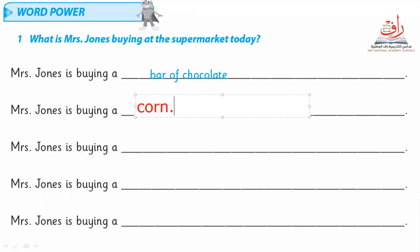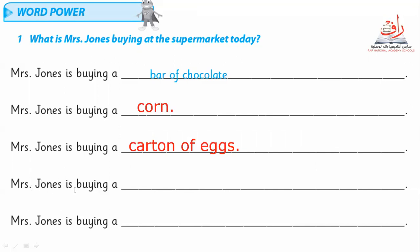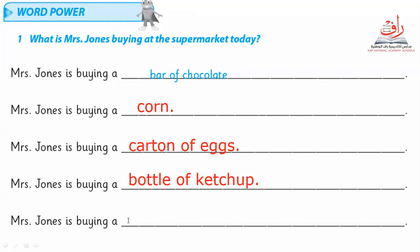Number two: Mrs. John's is buying corn. Number three: Mrs. John's is buying a carton of eggs. Number four: Mrs. John's is buying milk. Then we have a bottle of ketchup. The last one — you can choose mayonnaise or cereal — I'm going to choose milk.